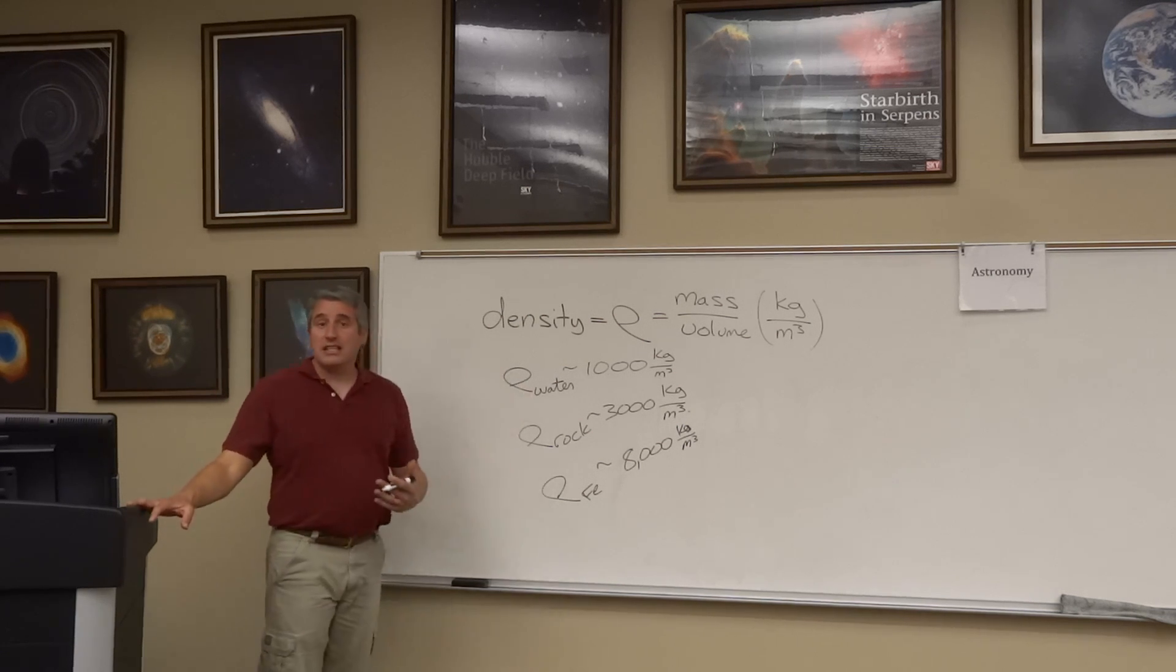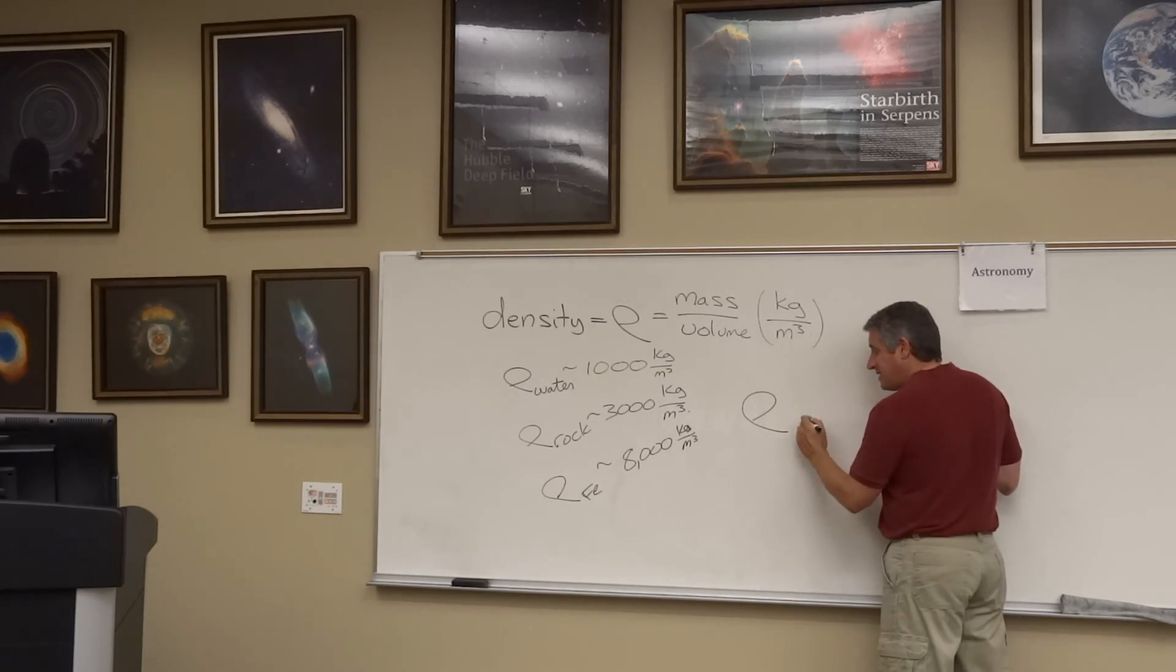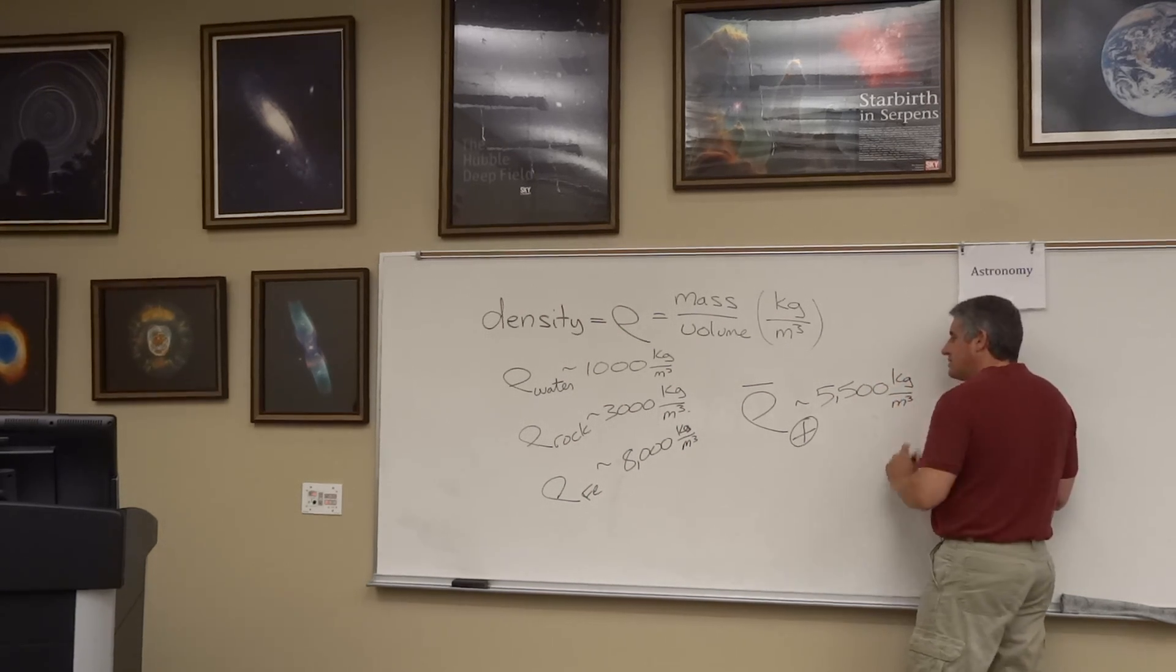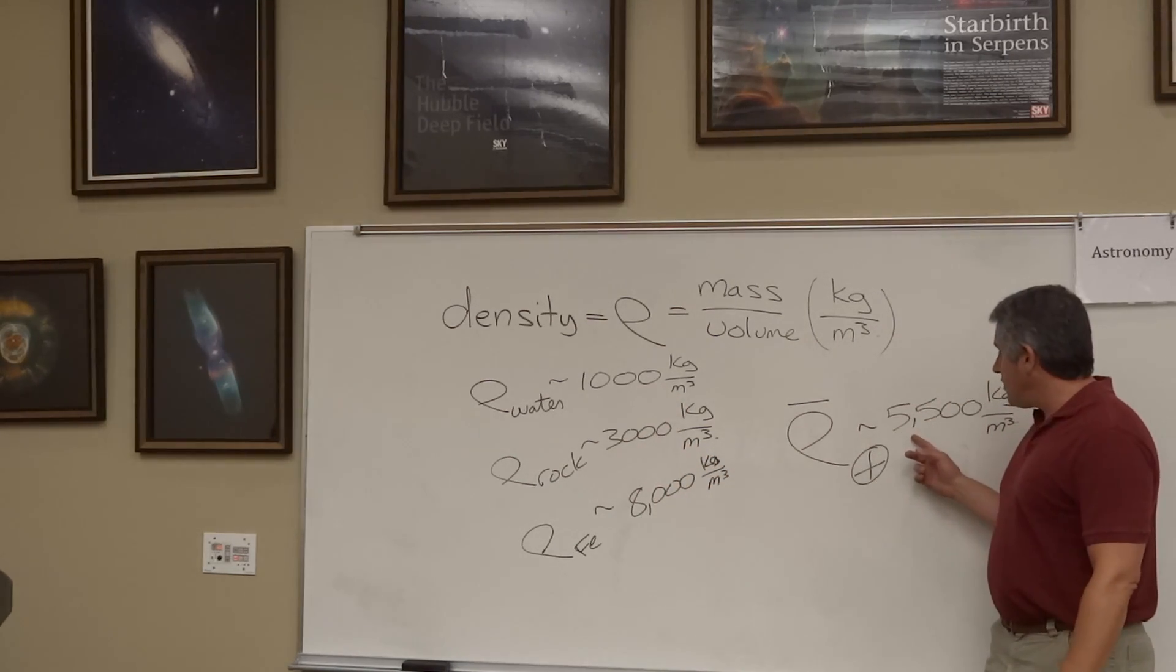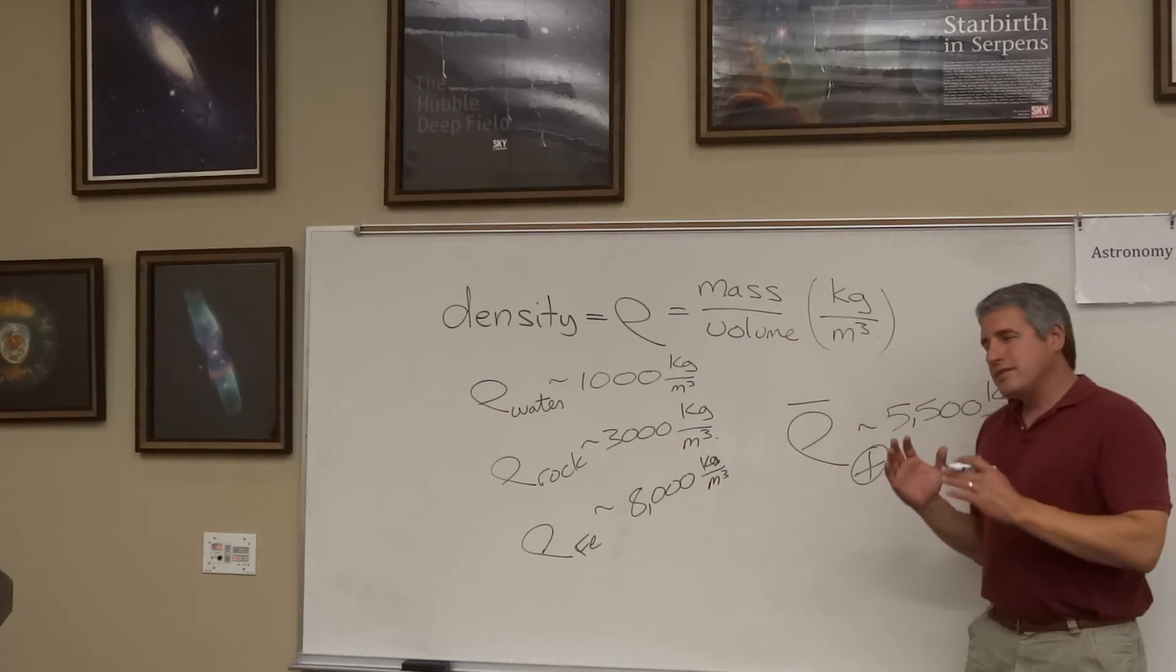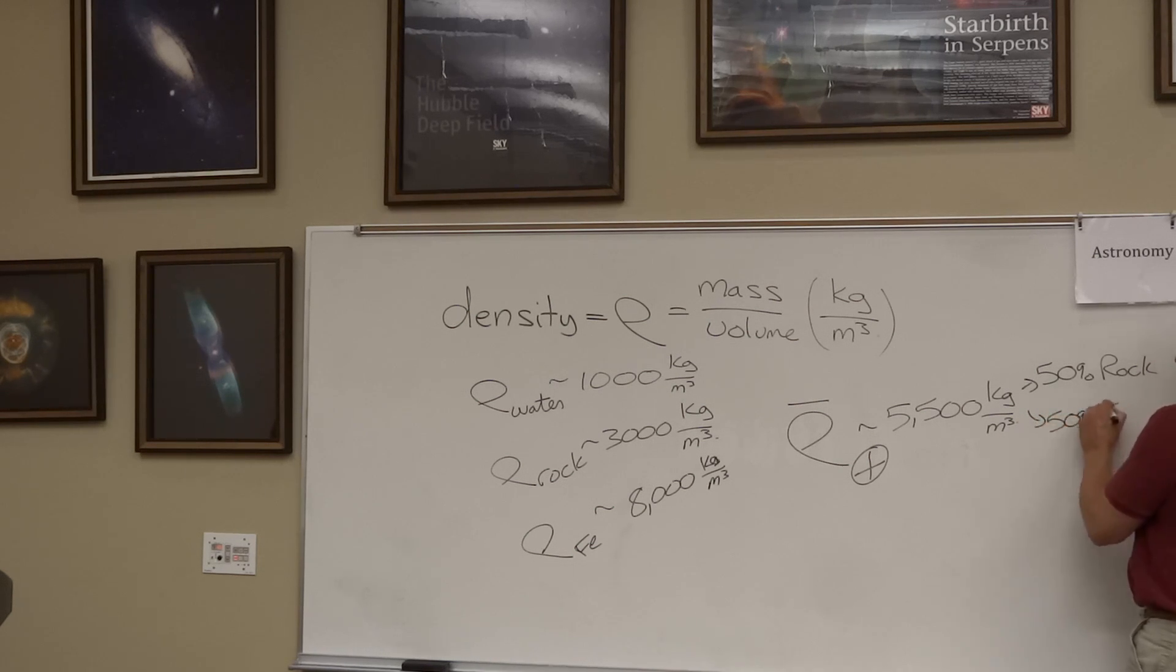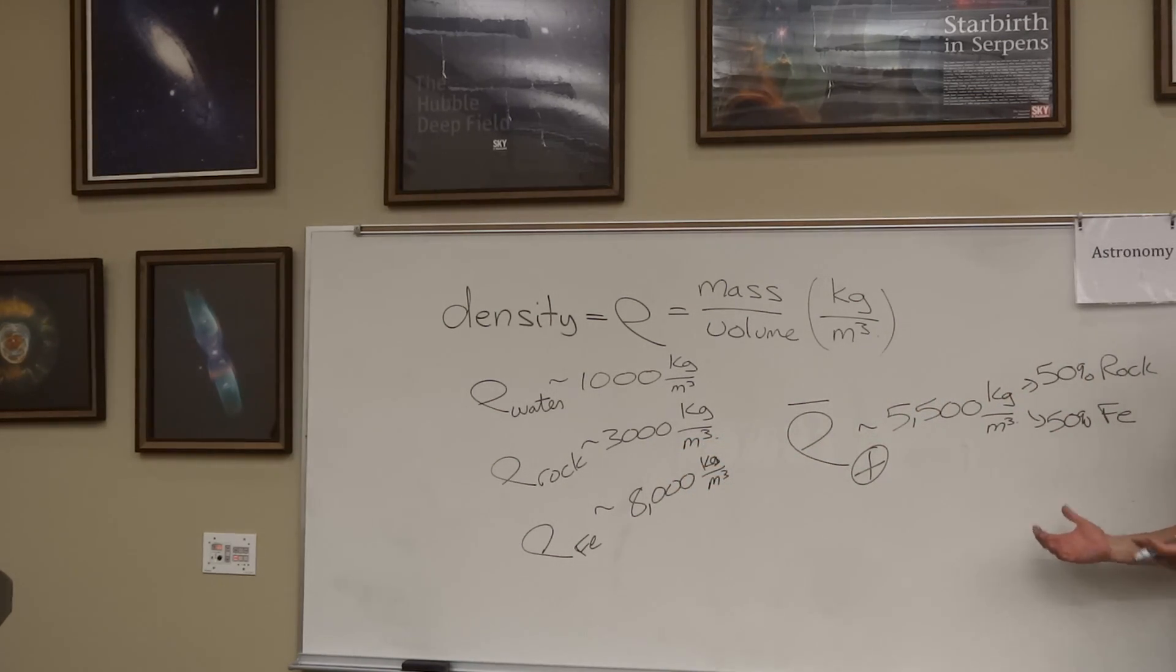Because you can look at the average density of a solid object. For example, the density of the Earth. The average density of the Earth is approximately 5,500 kilograms per cubic meter. What does that tell us? Well, if the Earth is made of water, rock, and iron, it tells us that 5,500 sits somewhere in between rock and iron. So that tells us that the Earth is probably made of about 50% rock and 50% iron. An object that is 50% rock and 50% iron will find itself halfway between 3,000 and 8,000 and come up with an average density of 5,500.